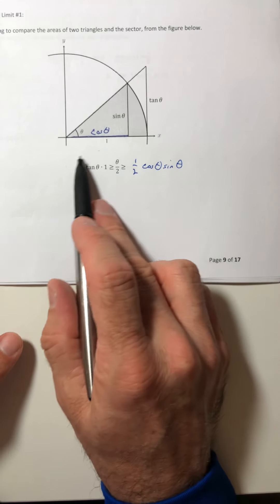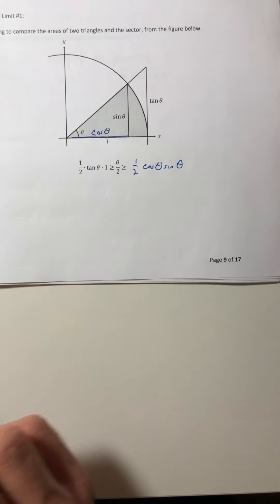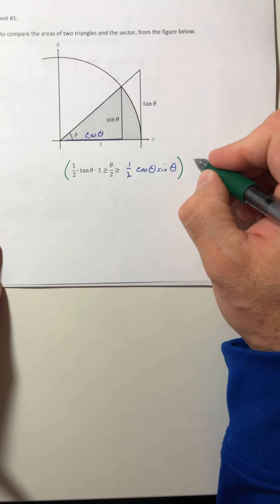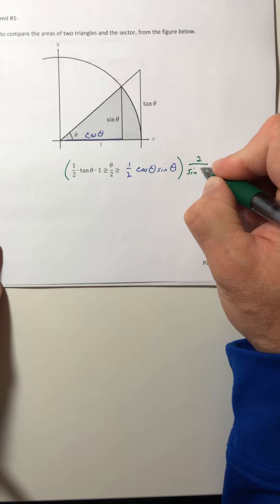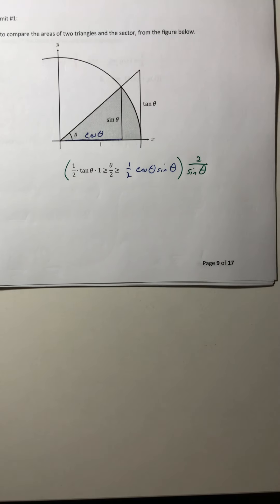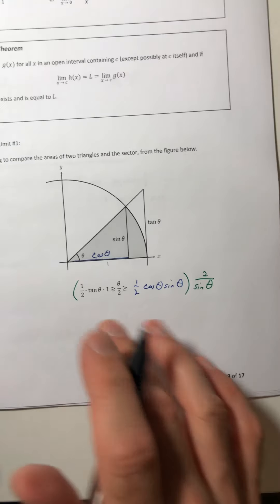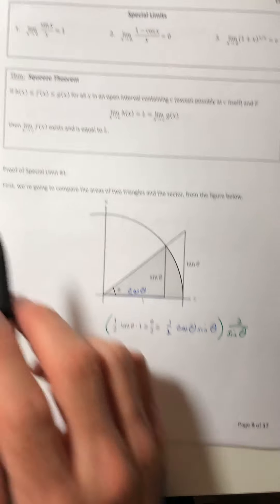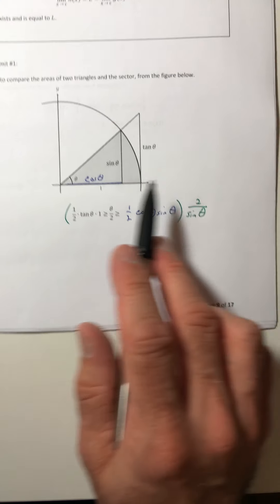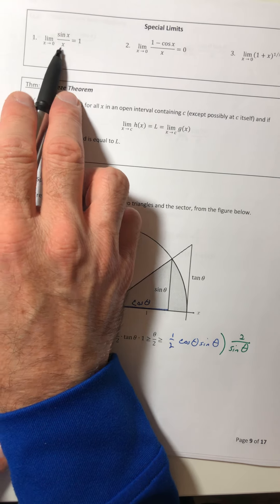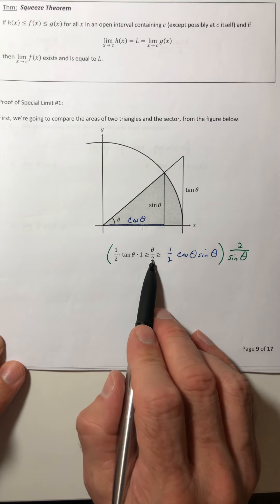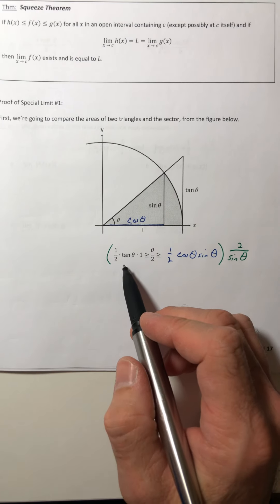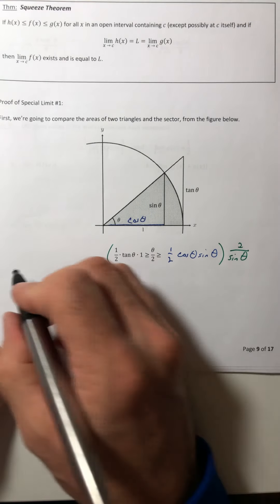So what I'm going to do with this is I'm going to multiply everything in there by two over sine of theta, which I know you're going, what? Why would we do that? Well, keep in mind, we're trying to get to this. We don't have this in here, so I'm doing this so I can hopefully come out with something that looks like that. So I'm going to multiply this to each of these. So on the first one, you know, the twos cancel out. The tangent times one over sine, I'd be left with one over cosine of theta.